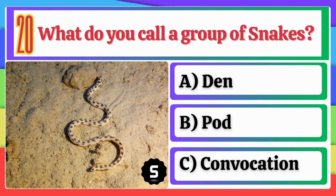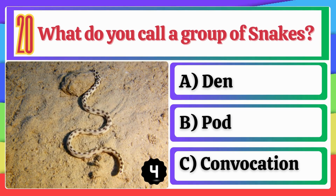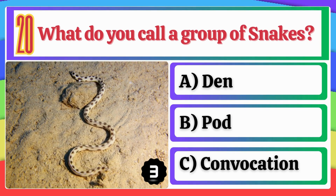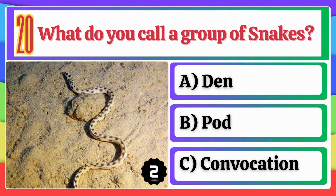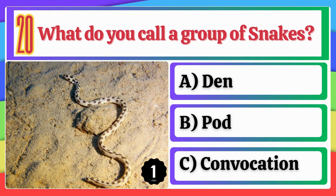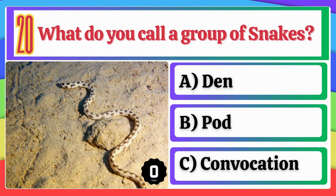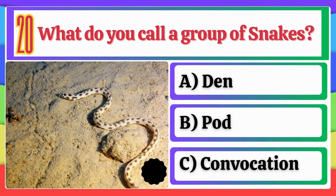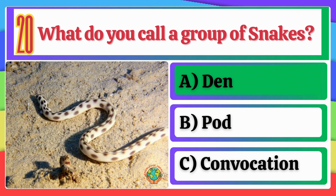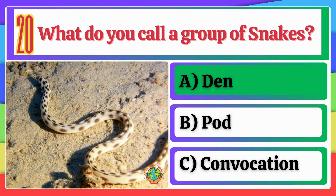What do you call a group of Snakes? A. Den. B. Pod. C. Convocation. The right answer is Option A, Den.